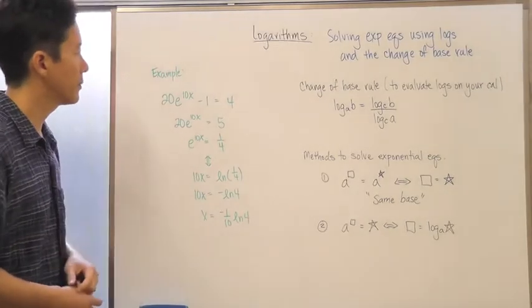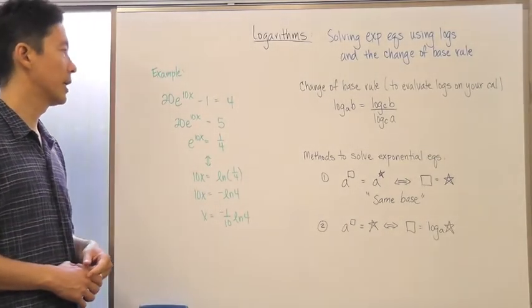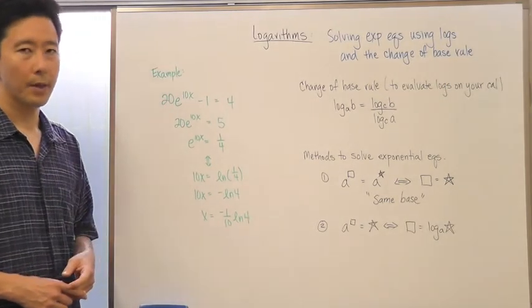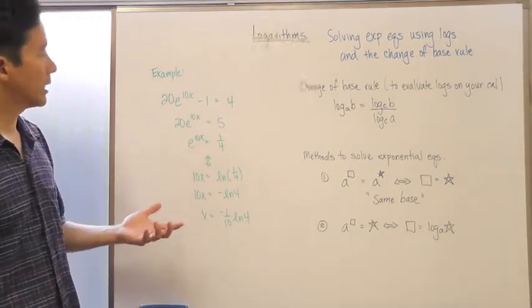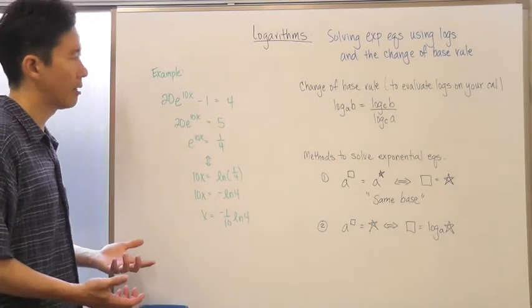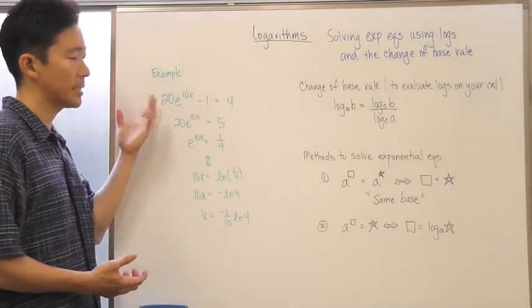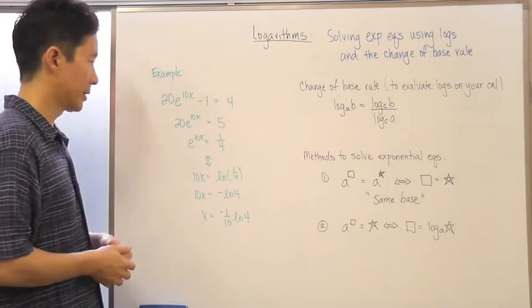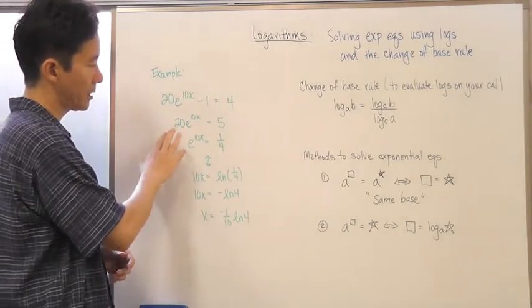Let's say for example we have this equation: 20e to the 10x minus 1 equals 4. Now we cannot get the same base on both sides because this side has e and there's no way that we're going to get e onto the other side.